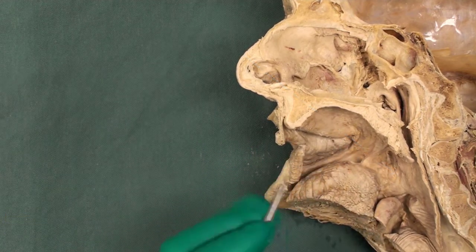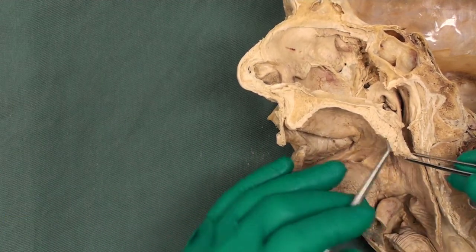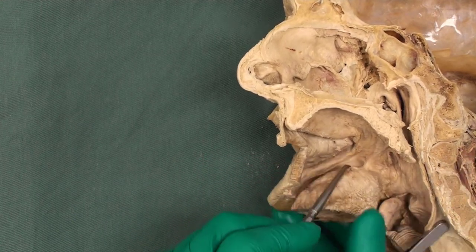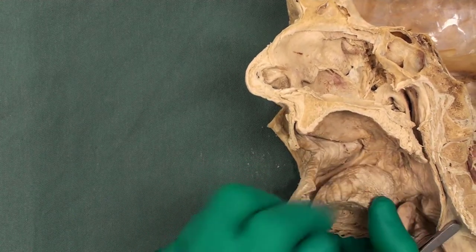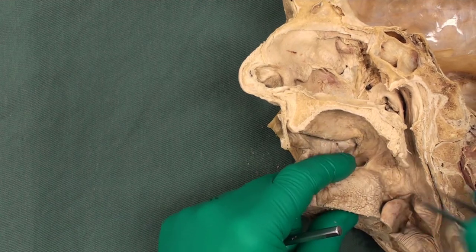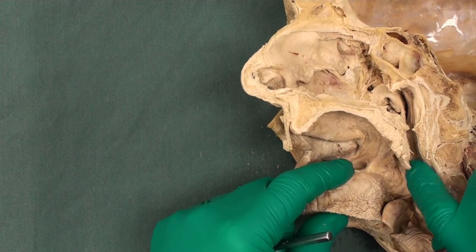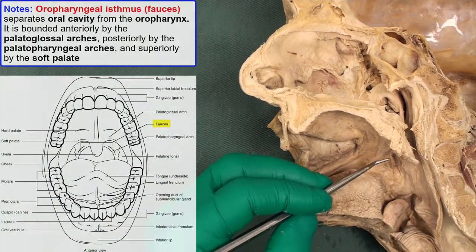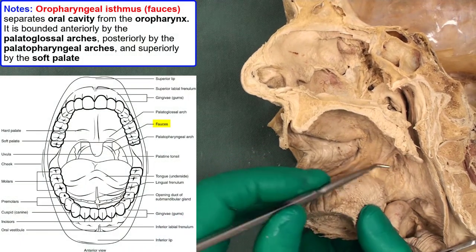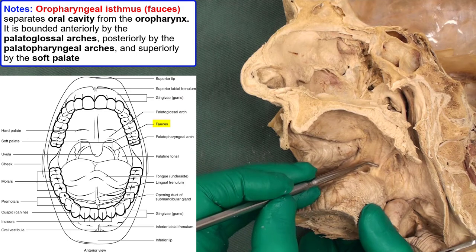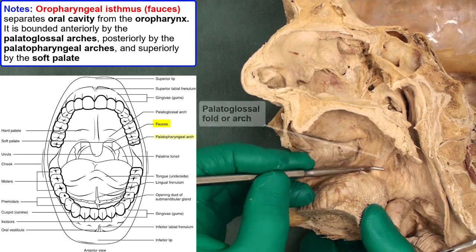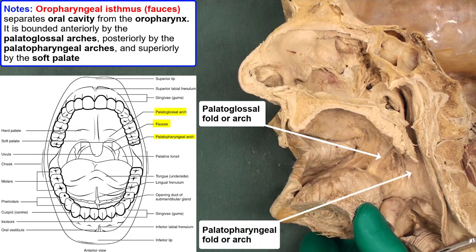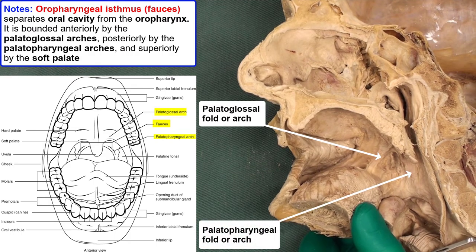The oral cavity is separated from this part of the pharynx by the oropharyngeal isthmus. That isthmus has anterior and posterior margins: the anterior margin is the palatoglossal fold and the posterior is the palatopharyngeal fold.